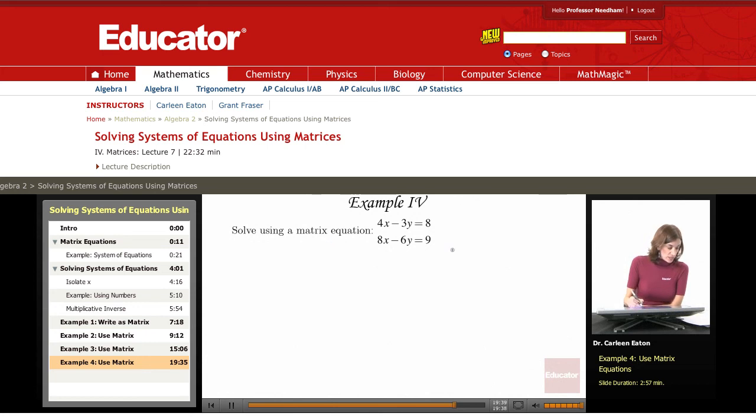Solve using a matrix equation, and I'm going to keep in mind that I want to find X equals A inverse times B, where A is a matrix with the coefficients of X and the coefficients of Y. B is a matrix containing the constants, 8 and 9, and X is a matrix containing the variables in the system of equations.